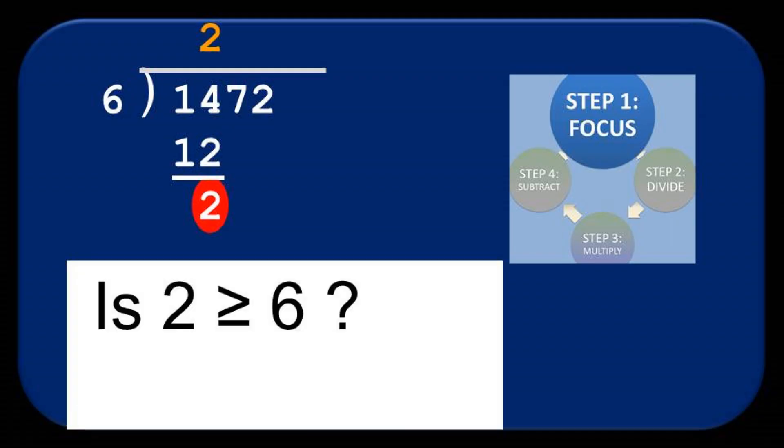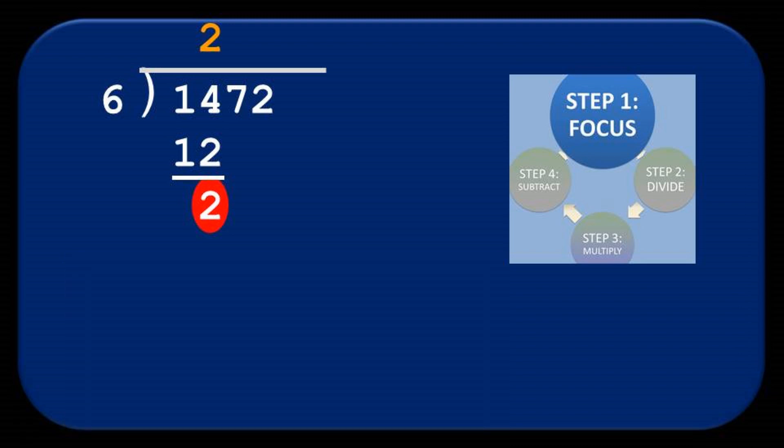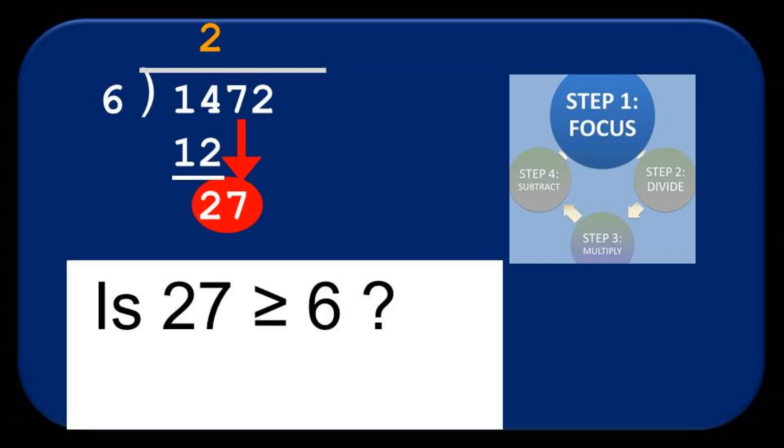As we know, 2 is not greater than or equal to 6, our divisor. So, that can't be the focus by itself. We pull down the 7, which is the next digit in the dividend under the rooftop. This gives us a new focus of 27, which is indeed greater than 6.